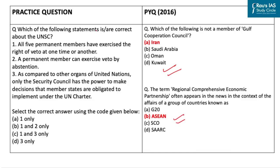The practice question asks which of the following statements is or are correct about the UNSC. The first statement says all five permanent members have exercised the right of veto at one time or another — this is correct, as all P5 member states have utilized their veto power. The second statement says a permanent member can exercise veto by abstention — this is not correct, because if a permanent member does not fully agree with a resolution but does not wish to cast a negative vote, it may choose to abstain, thus allowing the resolution to be adopted if it obtains the required number of favorable votes.